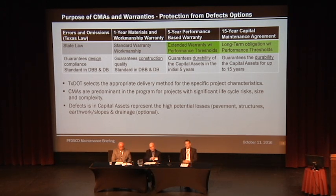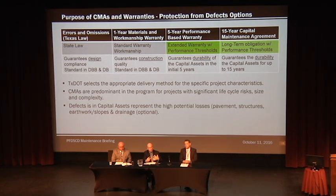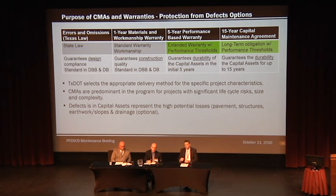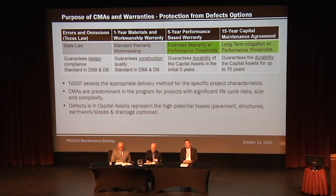The contractor provides all of the maintenance on capital assets. TxDOT handles adjacent routine maintenance — litter, mowing, and the like. The division assumes that TxDOT has picked the appropriate combination of technical and commercial terms during the design-build. The CMA is an integral component to that overall contract, and it needs to be enforced so TxDOT gets their value from it.